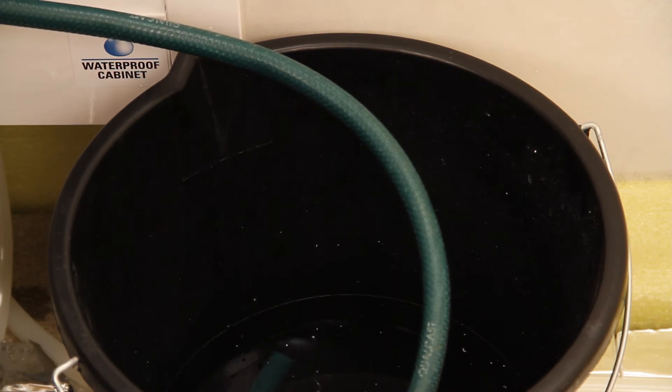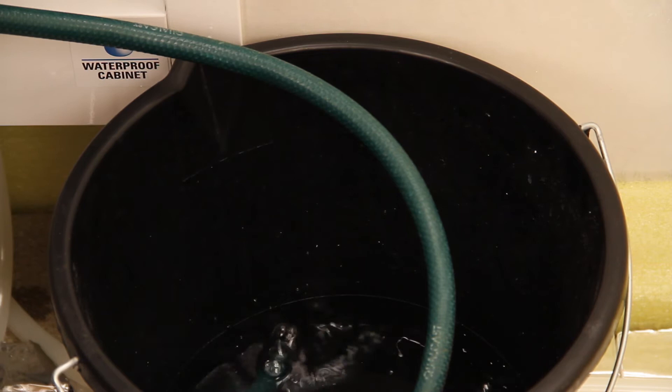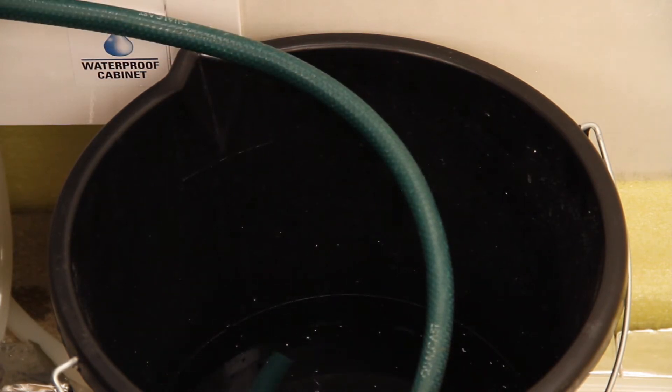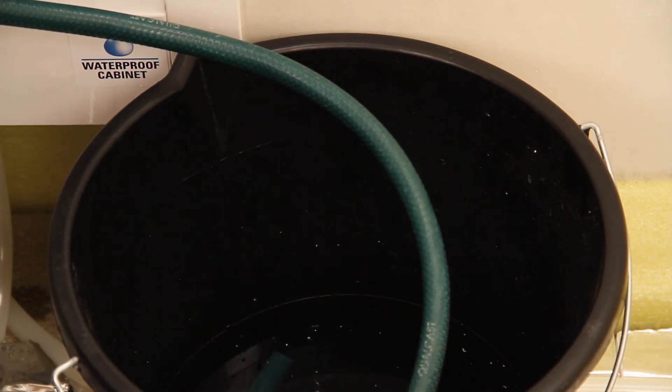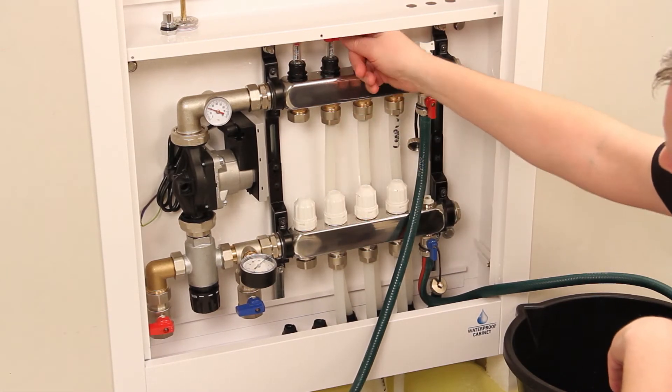Make sure that the drain hose is directed into the bucket, air will pass through the pipe and show as bubbles in the water. When the water runs clear, close the manual return valve and corresponding flow gauge. This will seal off that circuit.